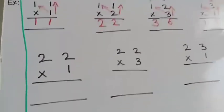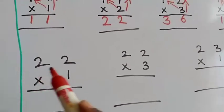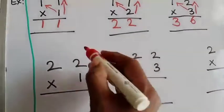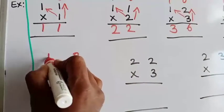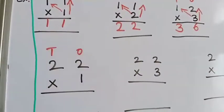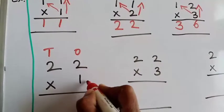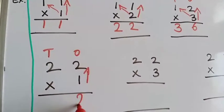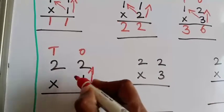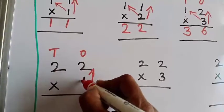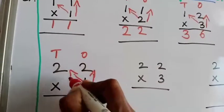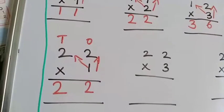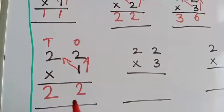The next one is 22 into 1. The first step — write 1's and 10's place. Then, 1 two's are 2. Again, from here to here — 1 two's are 2. The total answer is 22.